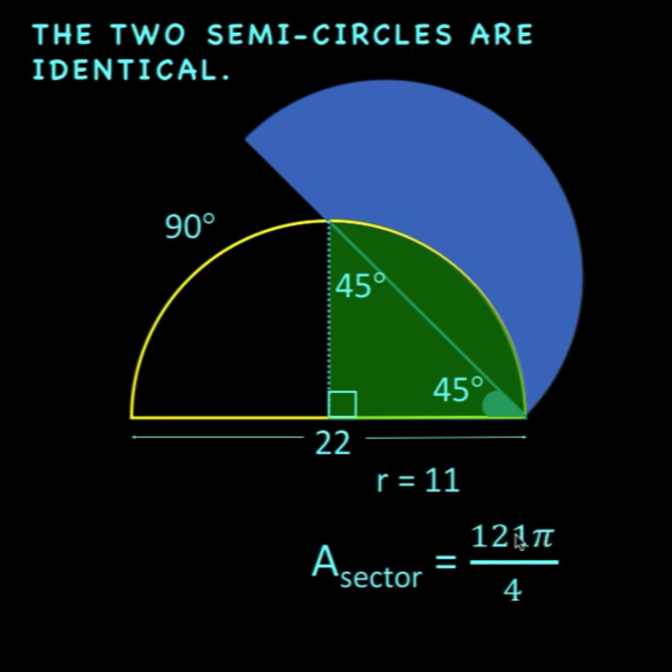So π times 11 squared is 121π, and divide it by 4 to get the area of the quarter circle.